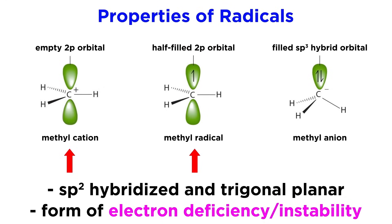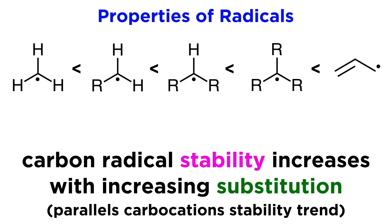Just like a carbocation, we will consider a carbon radical to be a form of electron deficiency, and therefore a source of instability, so this determines the kinds of chemistry radicals will do.